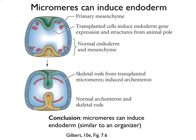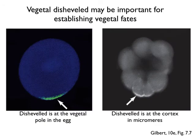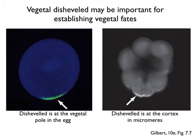Can we put some molecular details into the mix? The protein disheveled, which is connected with Wnt signaling, is localized at the vegetal pole in the fertilized egg. At the 16-cell stage the micromeres have high levels of disheveled at their vegetal surfaces — disheveled is at the cortex in micromeres. It is possible that disheveled is involved in helping micromeres to differentiate and then in sending signals to surrounding cells to help them differentiate as well.